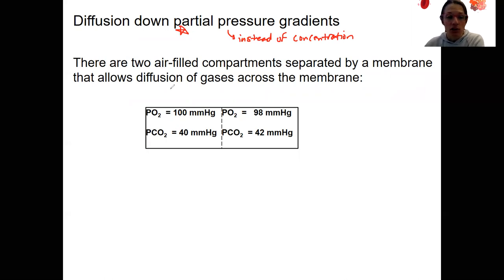So let's look at this. Let's say you have two air-filled compartments separated by a membrane that allows for diffusion of gases across that membrane. Which way is each of these gases going to move? Hopefully, you can figure that out, right? So which way is O2 movement and CO2 movement? They're both going to move down their partial pressure gradients. So that is that way for oxygen and that way for carbon dioxide.